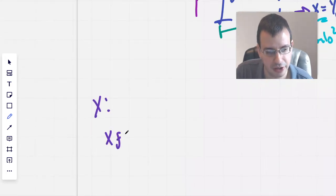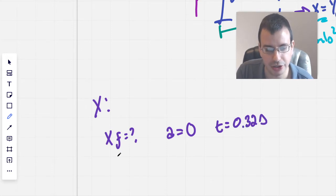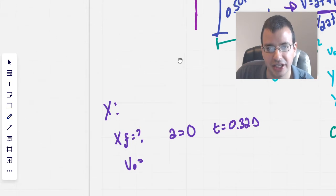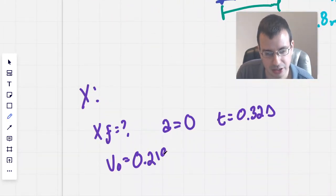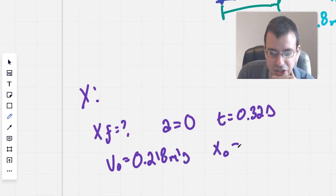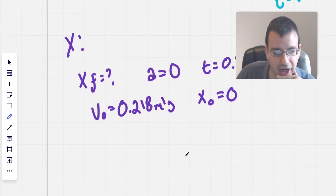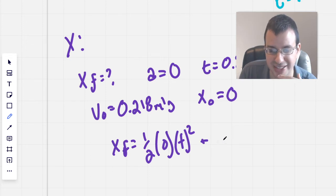So x final equals question mark. Acceleration is 0 because there's no acceleration in the x direction. t is going to be the same as it was in the y direction, so 0.32. Initial velocity, we were given an initial velocity of 0.218. 0.218, and that's in meters per second. And I'm going to say that the initial distance is 0. So we're writing up the whole equation. x final, which is the distance we're looking for, is 1 half times 0.